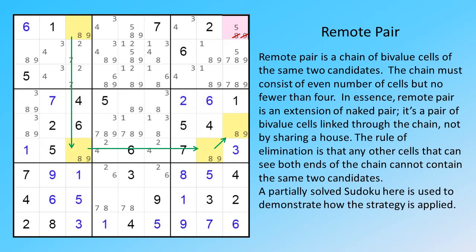Remote Pair is a chain of by-value cells of the same two candidates. The chain must consist of even number of cells, but no fewer than four. In essence, Remote Pair is an extension of Naked Pair.